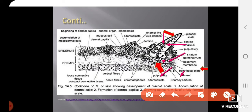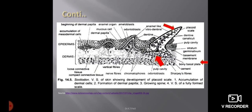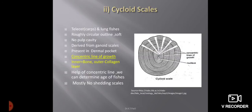The outer covering is a hard structure called vitrodentine, which is like enamel. So in summary: the basal plate is embedded in the dermis and attached with Sharpey's fibres; the pulp cavity in the middle is supplied with nerves and blood vessels; the dentine is divided into dentine canaliculi; and the outer hard covering is made by vitrodentine.